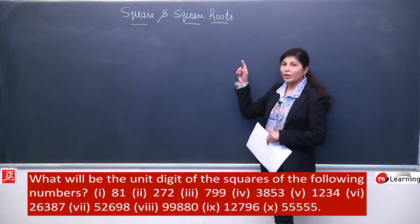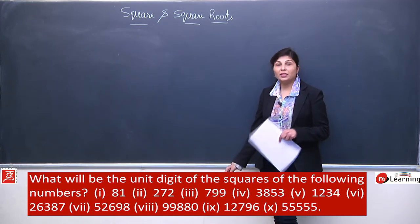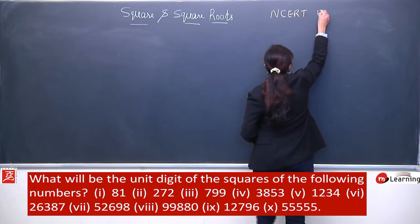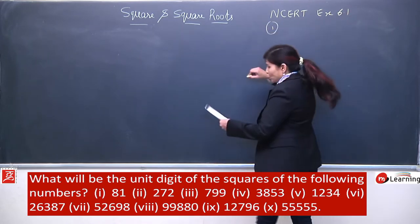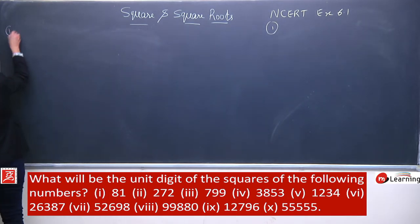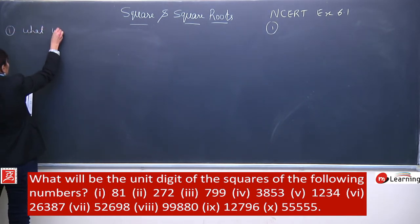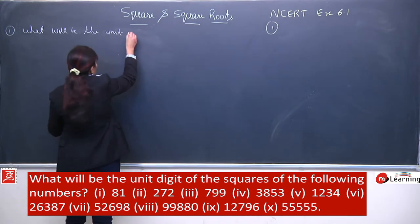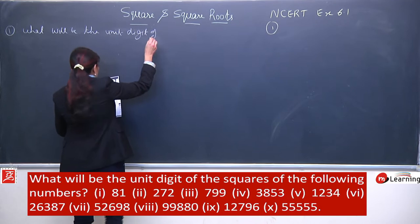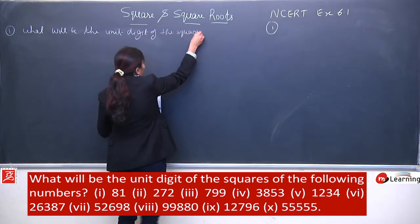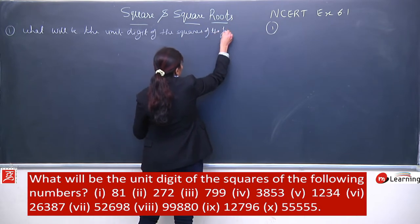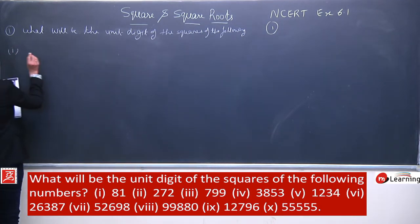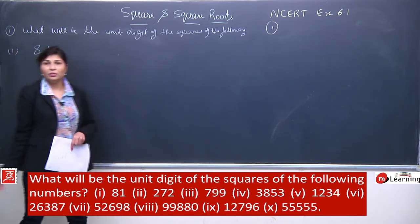Students, after learning so many properties about squares and square roots, now I am going to start Exercise 6.1 NCERT. The first question is: what will be the unit digit of the squares of the following numbers? Some numbers are given and we have to find the unit digit of their squares. First, let's understand what unit digit is — it is the last digit, starting from the right, that is the unit place.